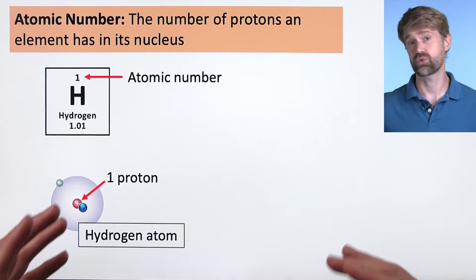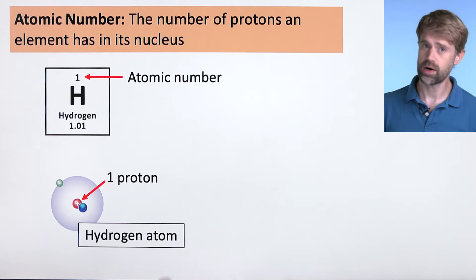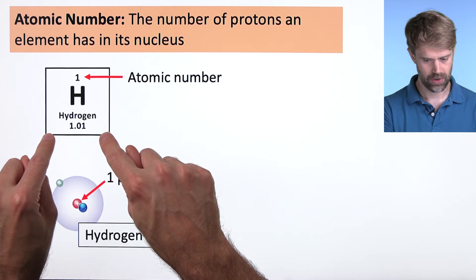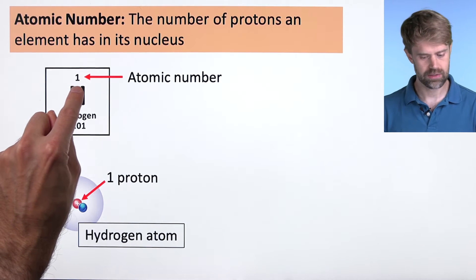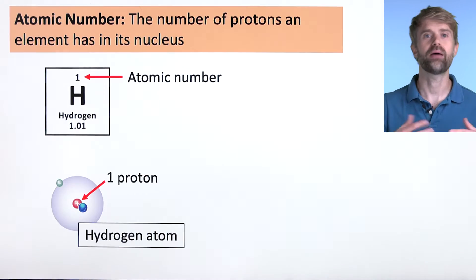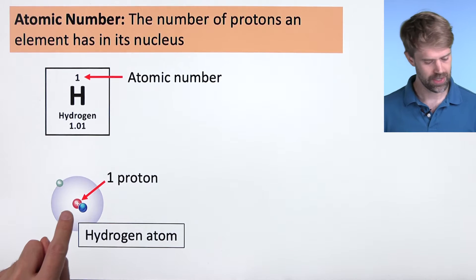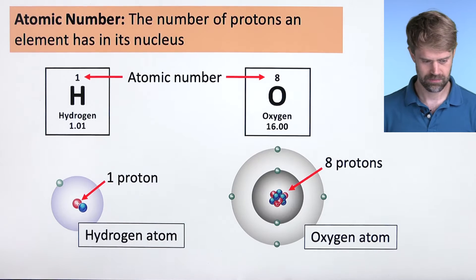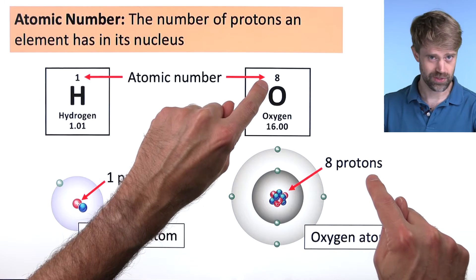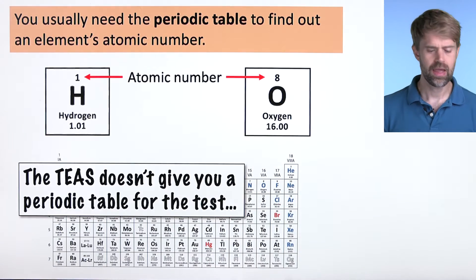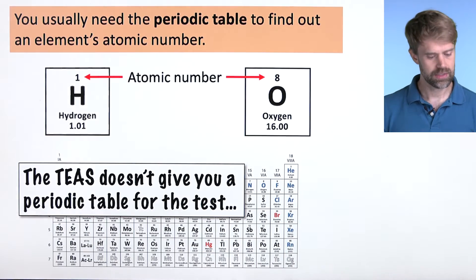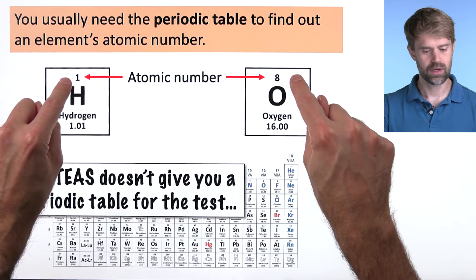And of course, this is true for every element. So if you want to know how many protons are in any element, you just look up the square on the periodic table and you look at the atomic number. Hydrogen here has an atomic number of one and that means that every hydrogen atom has one proton in the nucleus. And here's an oxygen atom with, well, you guessed it, eight protons in the nucleus. Now, as you can see, you usually need a periodic table to find out an element's atomic number.